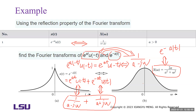This figure shows the Fourier transform of the function x(t) = e^(-a|t|).